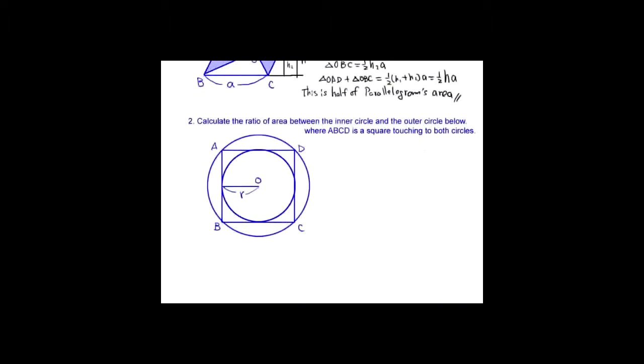Second one. Calculate the ratio of area between the inner circle and outer circle below where ABCD is a square touching to both circles. Say inner circle's radius is R.